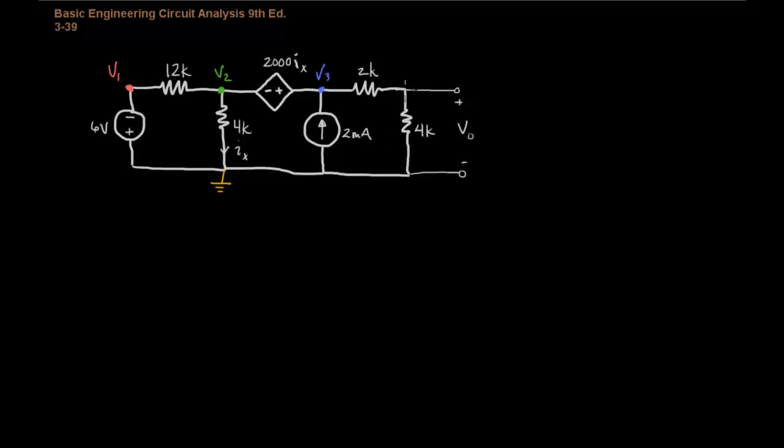And then V2 and V3. Notice that this node right here is, in this case, V0 because of where we chose our ground to be.